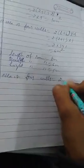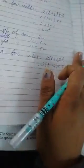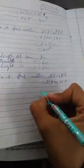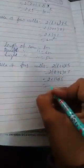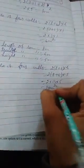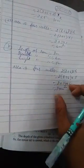Same formula. 2 into L plus B into H. 8 plus 6 into 5. 2 into 14 into 5 that is equal to 140 meter square. This is the area of 4 walls.